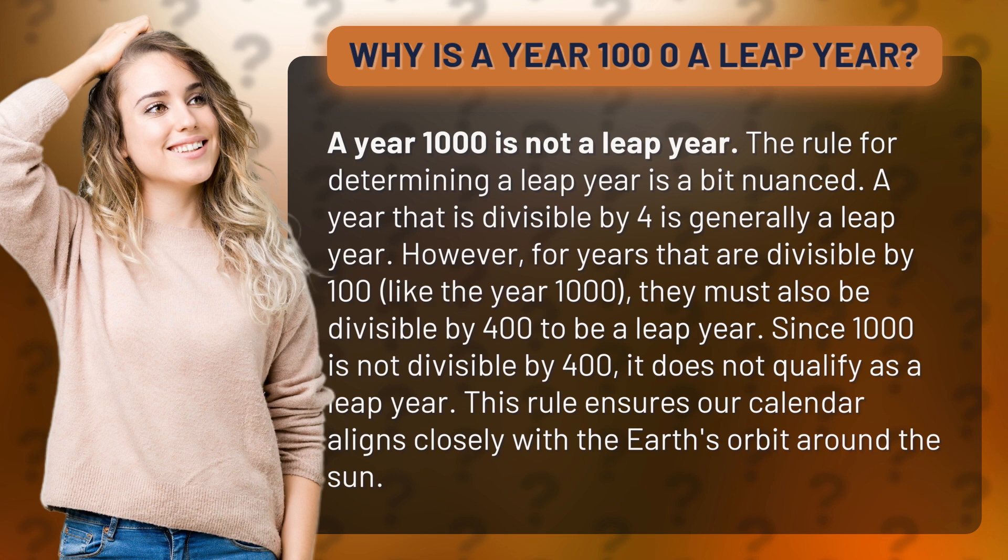A year that is divisible by 4 is generally a leap year. However, for years that are divisible by 100, like the year 1000, they must also be divisible by 400 to be a leap year. Since 1000 is not divisible by 400, it does not qualify as a leap year.